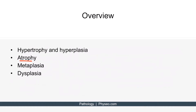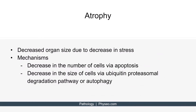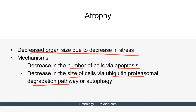Now let's move on to discuss atrophy. Simply put, atrophy refers to a decrease in organ size due to decrease in stress. Atrophy can occur due to a decrease in the number or size of cells. Decrease in cell number occurs via apoptosis. Decrease in cell size involves two mechanisms: the ubiquitin proteasomal degradation pathway and autophagy.